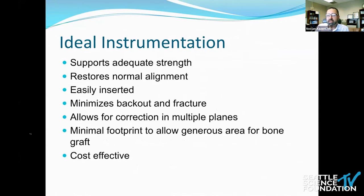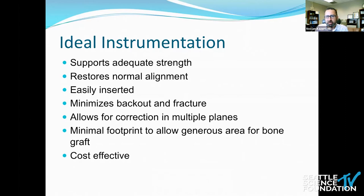So what is the ideal instrumentation? What do we look for when selecting our implants? It has to have adequate strength to do its job and not fail across multiple cyclical loads. It has to be able to restore normal alignment — extremely important not just for spinal and pelvic parameters or quality of life indices, but for longevity of the implant and construct. It has to be easily inserted, allow for correction in multiple planes, have enough footprint for generous fusion, and of course in our modern day, it has to be cost effective.